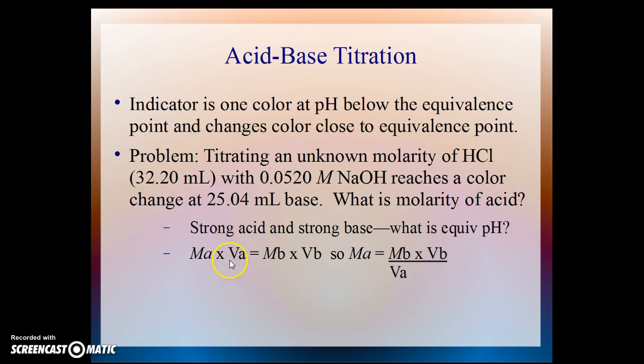Dividing both sides by volume of acid, we find molarity of the acid. The product of the molarity and volume of the base divided by the volume of the acid. Here, we plug in the numbers for the molarity of the base and the number of milliliters of base titrated and for the volume of the acid. And the answer is 0.0404 molar or moles per liter or millimoles per milliliter.